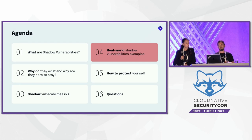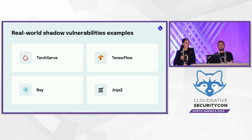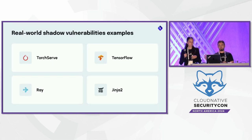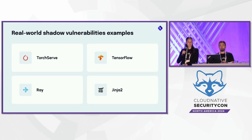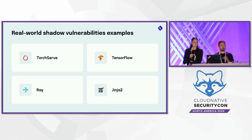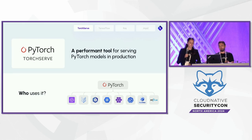Let's dive into some real-world examples of shadow vulnerabilities — all of which actually led to attacks. Some of them are discussed here for the first time, like Ray. We'll begin with PyTorch TorchServe, then talk about TensorFlow, Shadow Ray, and finally Jinja 2 and things that happened in the past year.